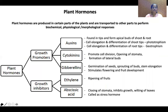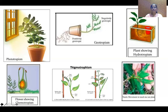All these tropisms are related to growth — that is tropic movement. Now the last type is nastic movement, for example the touch-me-not plant. When we touch these leaves, they fall because of the movement of water. Nothing is related to growth, so it is called nastic movement — it is independent of growth.